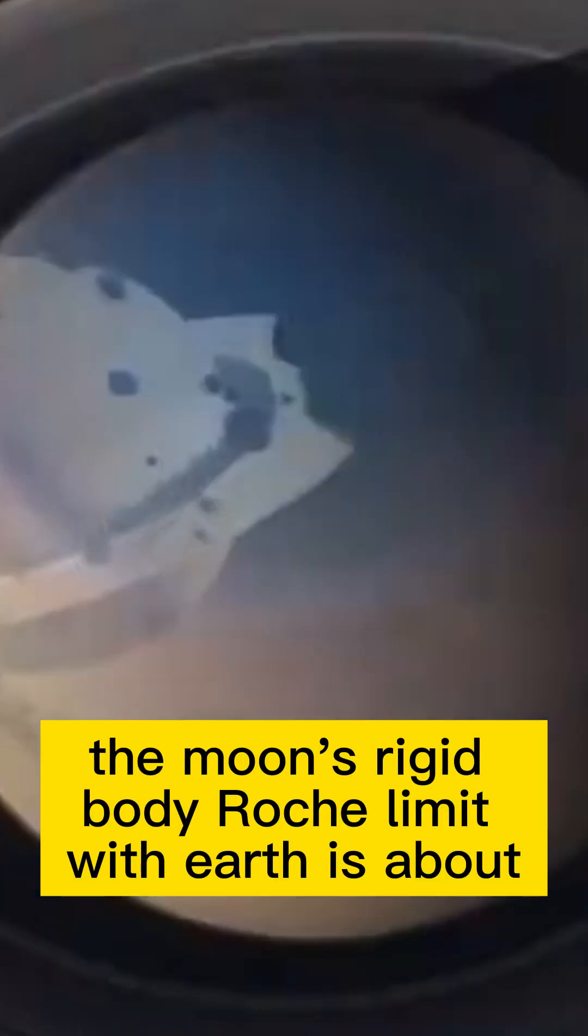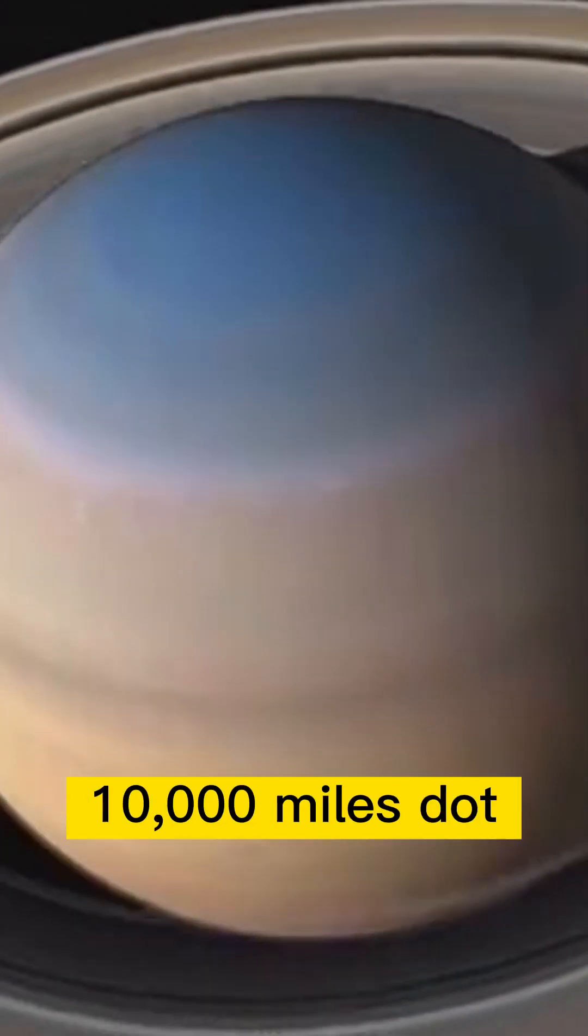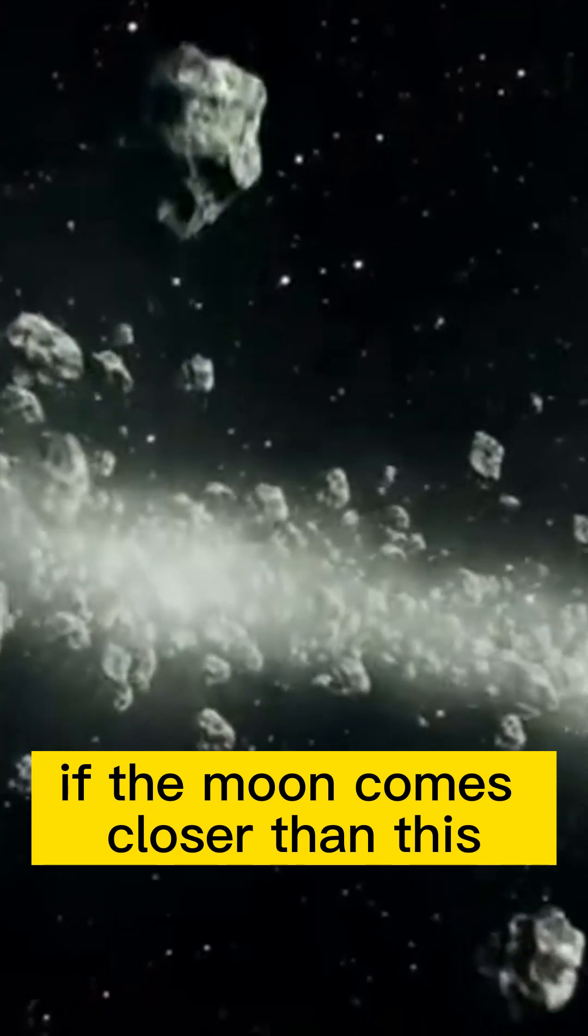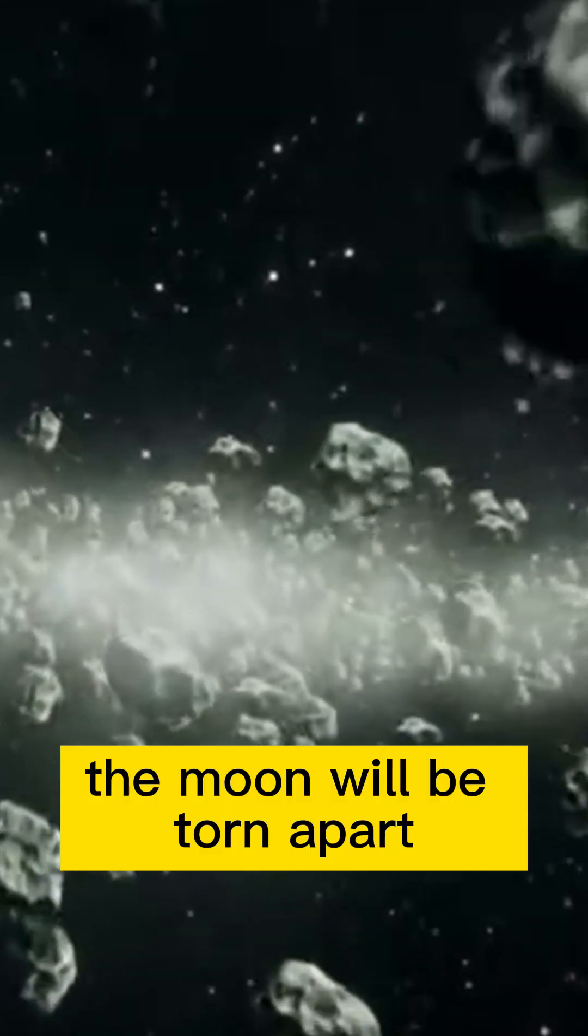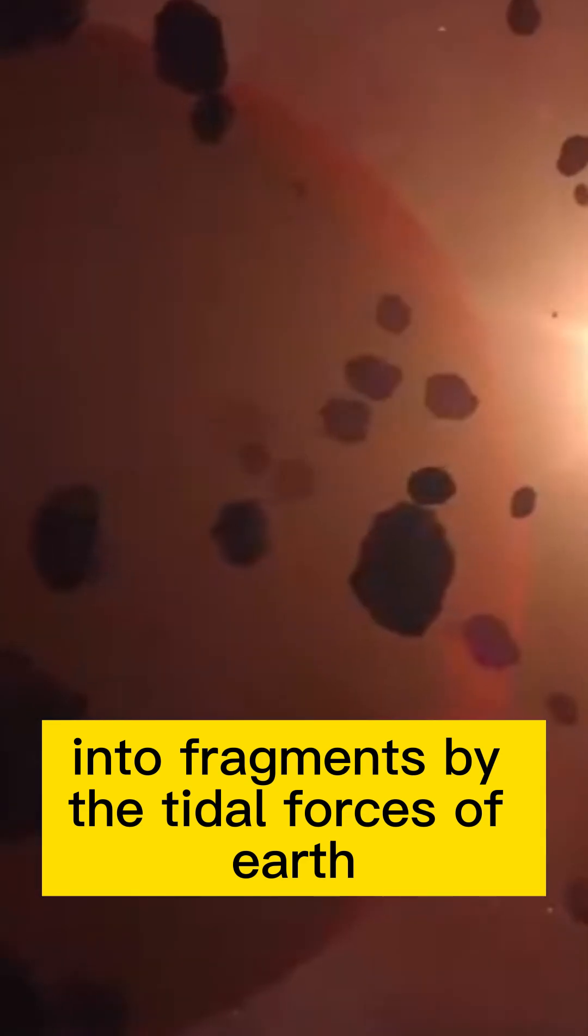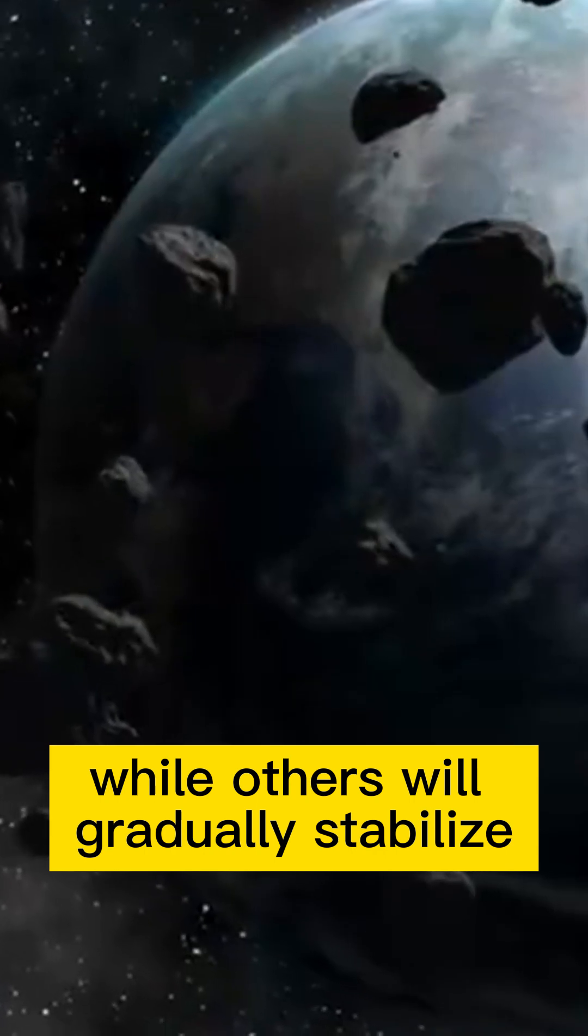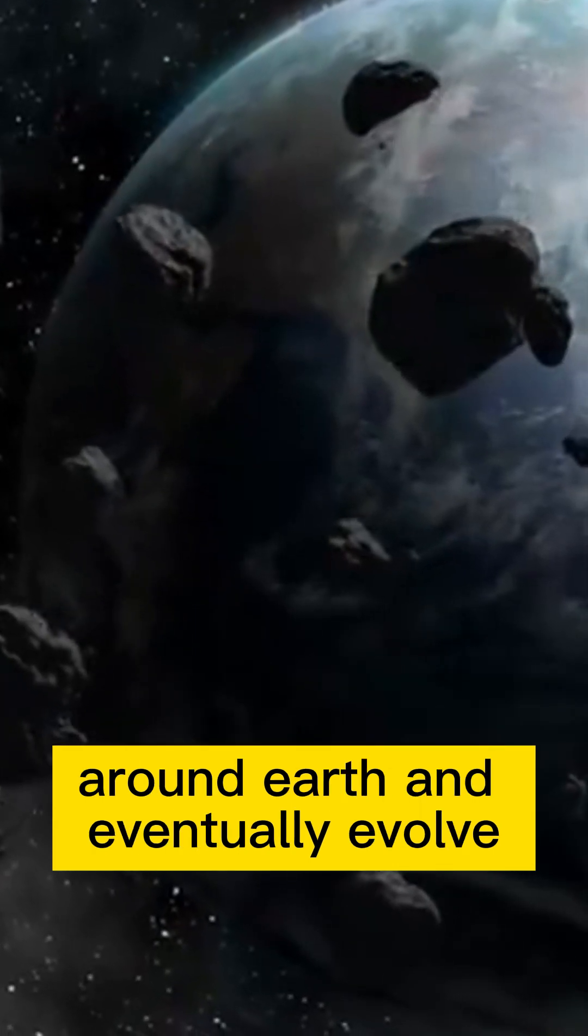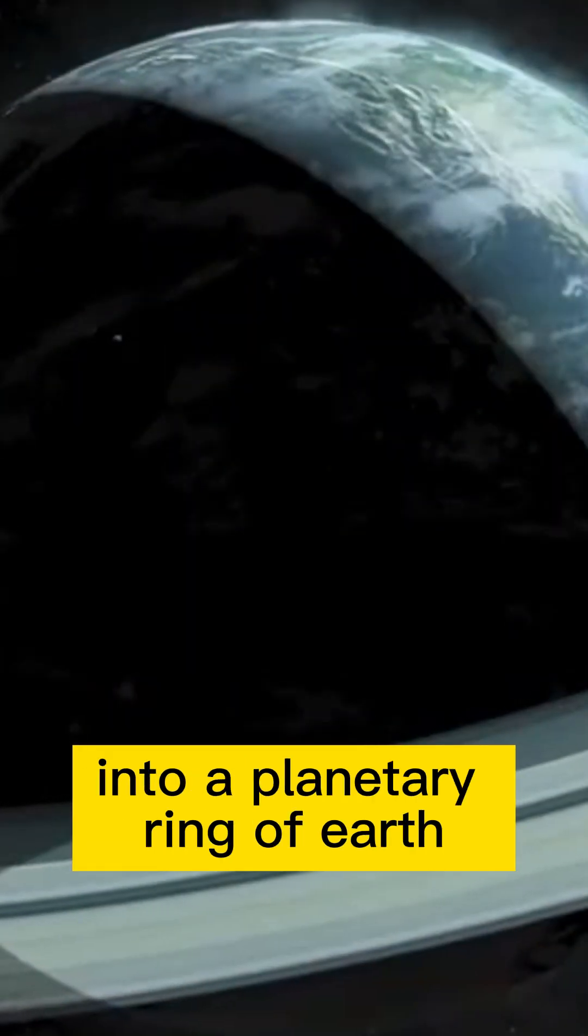The Moon's rigid body Roche limit with Earth is about 10,000 miles. If the Moon comes closer than this, the Moon will be torn apart into fragments by the tidal forces of Earth, some of which will fall onto Earth, while others will gradually stabilize around Earth and eventually evolve into a planetary ring of Earth.